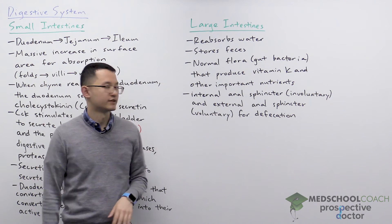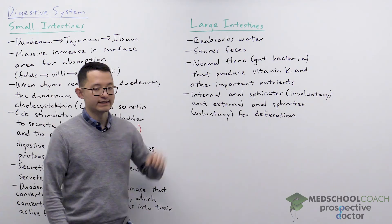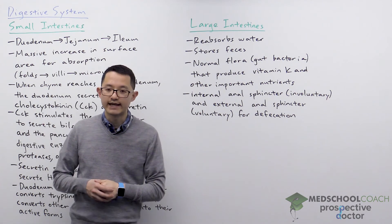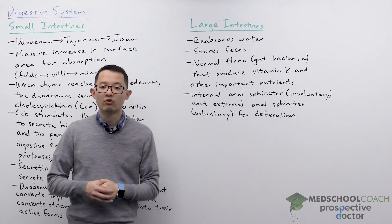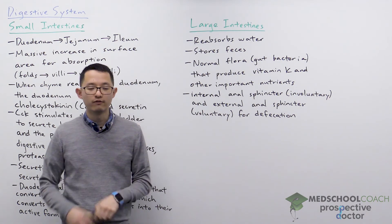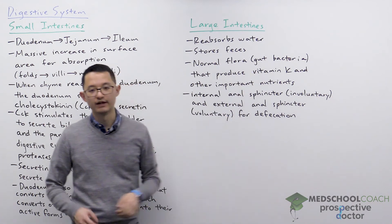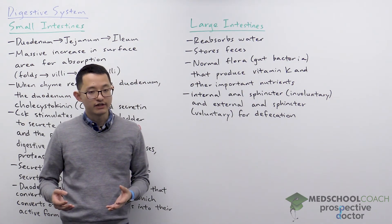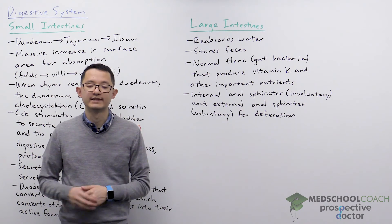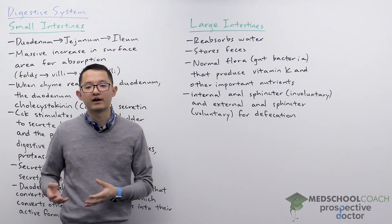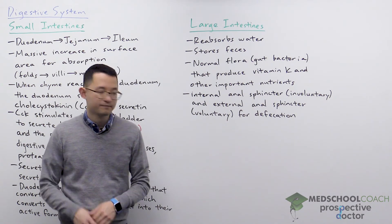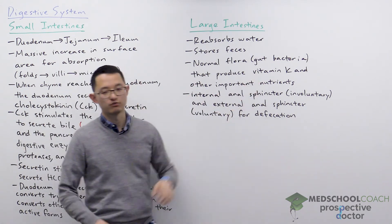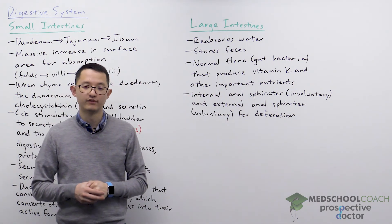The large intestines also contains normal flora. Normal flora are the gut bacteria found in all human GI tracts. These bacteria are good for humans and essentially have formed a symbiotic relationship with humans. For humans, they produce vitamin K as well as other important nutrients for the body.